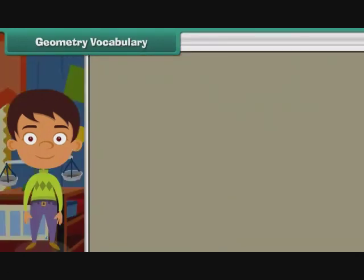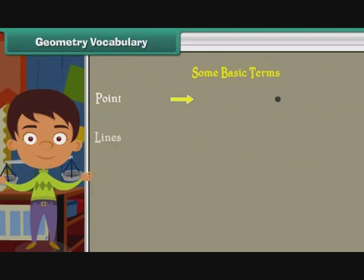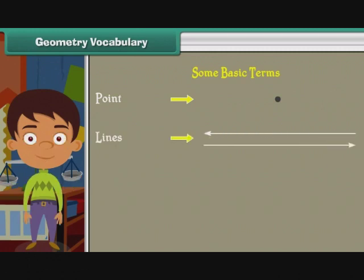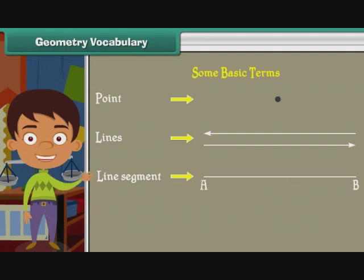Geometry vocabulary. Let us know about some basic terms used in geometry. Point: it is an imaginary thought. Lines: all these are straight lines. Line segment: part of a line is called a line segment. Here AB is a line segment. These are the curved lines.